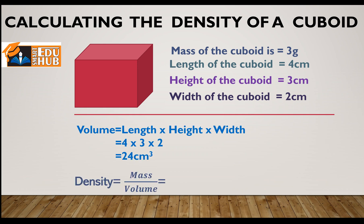Now I'm going to substitute the values of mass and volume into the formula for density, and that gives me 0.125 grams per centimeter cube. This is how you find the density of a cuboid.